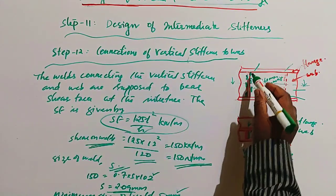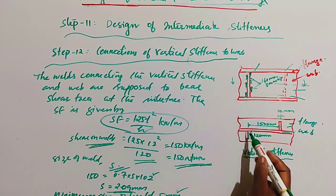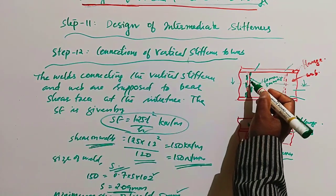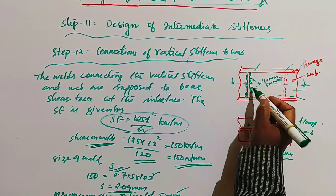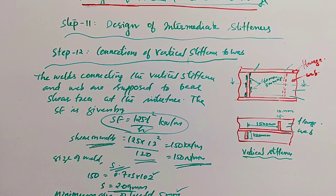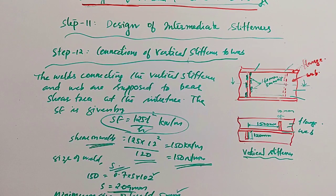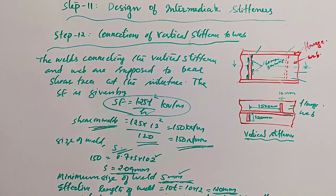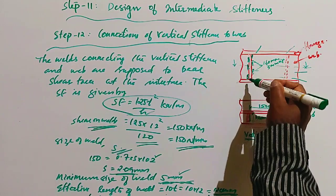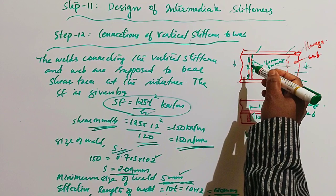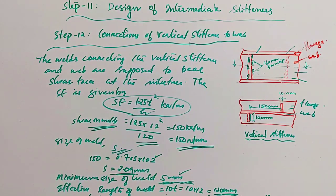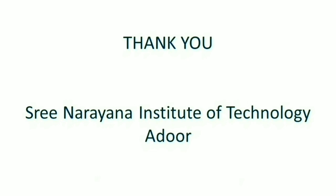The figure shows the intermediate stiffener with an outstand of 120 mm, a 5 mm fillet weld placed alternatively, and a connection length of 160 mm. In this session, step 10 covered the connection between the flange and web; step 11 covered the design of the intermediate stiffener; and step 12 covered the connection of vertical stiffeners to the web. For more references, these textbooks on bridges are recommended. Thank you.